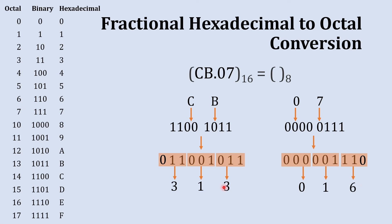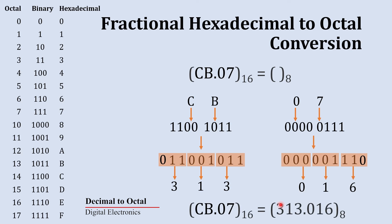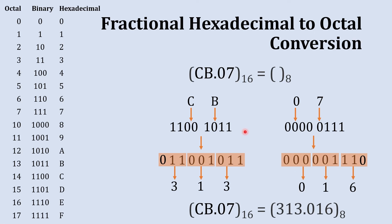Combining the whole number part and the fractional number part, 313.016 is the octal equivalent of this hexadecimal number. To explore more similar conversions, you can refer to the number system playlist, and to expand your knowledge in digital electronics through animated videos, you can refer to these playlists.